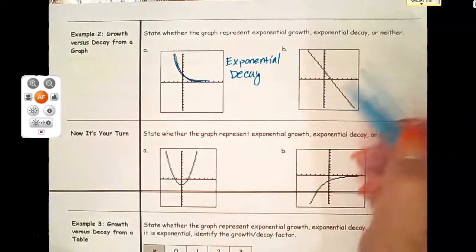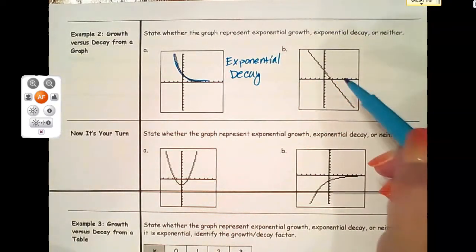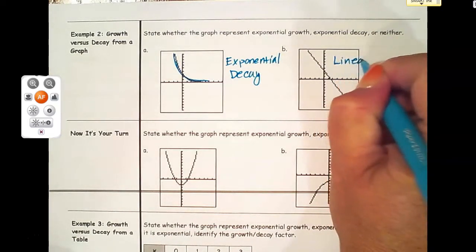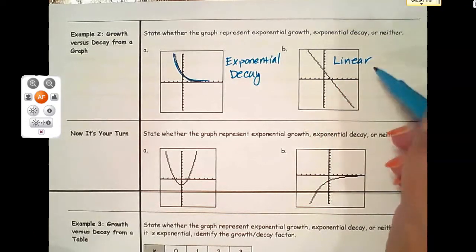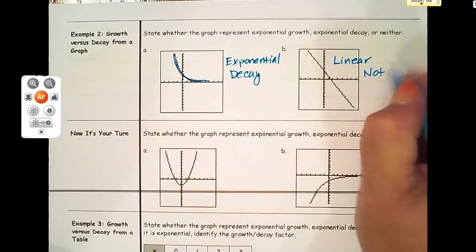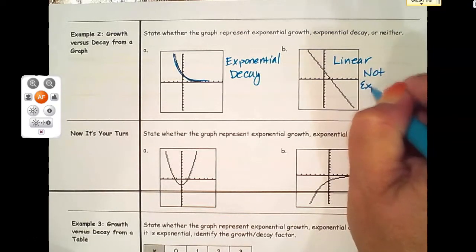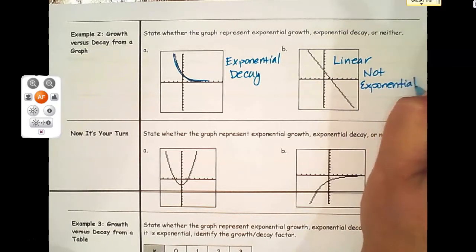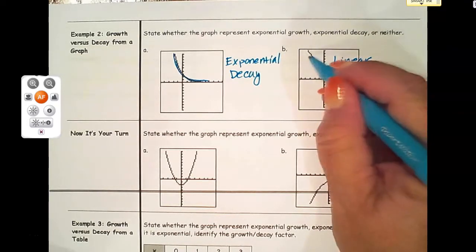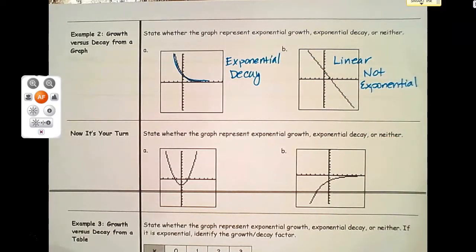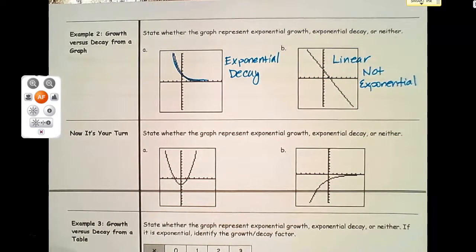This one's going downward so we're going to say that's a decay. Then as I'm analyzing letter b, hopefully the word that pops into your head is that this is a linear equation - the shape of a line. It's not an exponential function at all. Even though it has that negative slope and is decreasing, it's not an exponential decay.